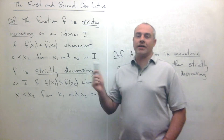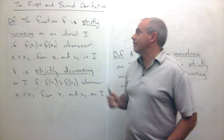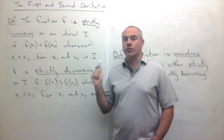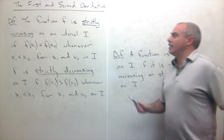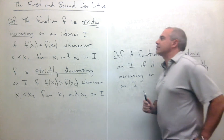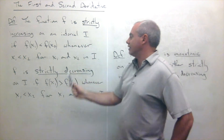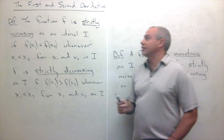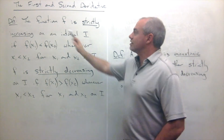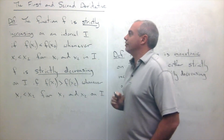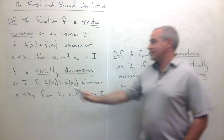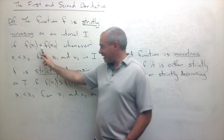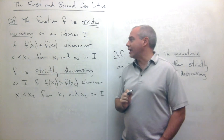Welcome back. Today I'd like to talk to you about the first and second derivative tests. We need to start with the definition of what it means for a function to be strictly increasing and strictly decreasing. What it means for a function to be strictly increasing on an interval is that the functional value of x1 is always less than the functional value of x2 if x1 is less than x2.